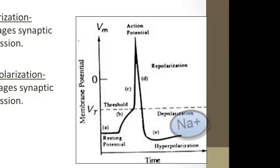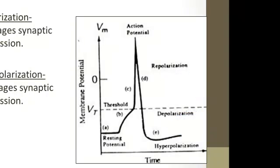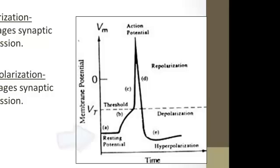They're in opposing places, which is why it's called hyperpolarization. Before a neuron is stimulated, when it's at resting potential, all the channels are closed and there is a membrane potential — a differential between the inside and the outside, with the outside being positive and the inside being negative.